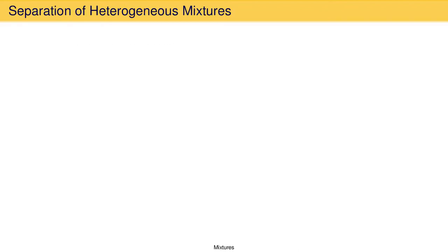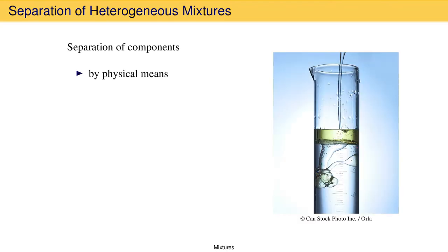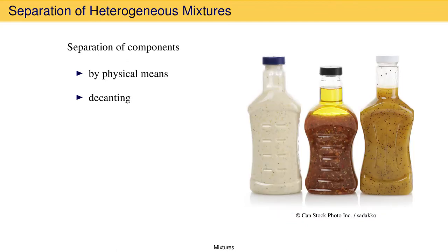For all of these types of mixtures, the components can be separated by physical means. For instance, the oil and water mixture can be separated by carefully pouring the oil off the top. This is called decanting. Salad dressing can be separated by pouring it through a filter to catch the bigger bits. This is called filtration.